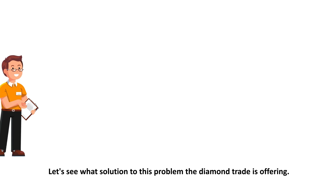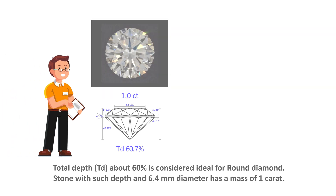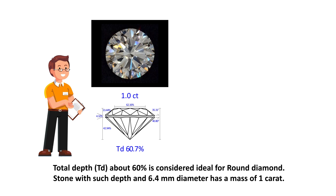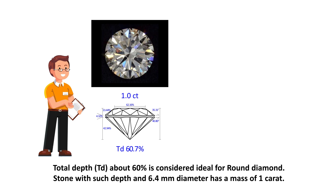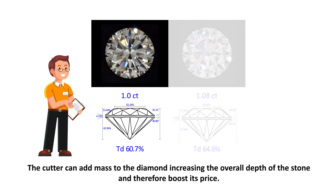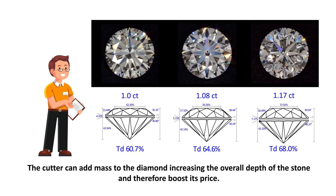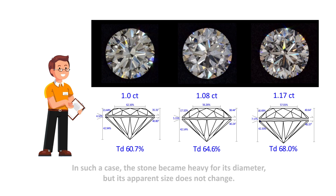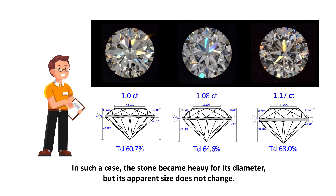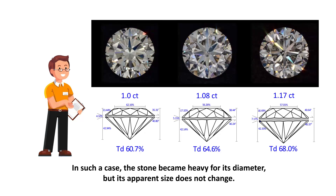Let's see what solution to this problem the diamond trade is offering. A total depth of about 60% is considered ideal for a round diamond. A stone with such depth and a 6.4 mm diameter has a mass of 1 carat. The cutter can add mass to the diamond by increasing the overall depth of the stone, and therefore boost its price. In such a case, the stone becomes heavy for its diameter, but its apparent size does not change.